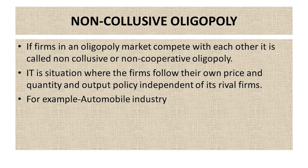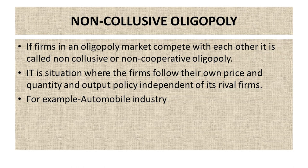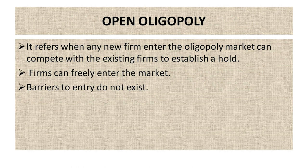The next type is non-collusive oligopoly. If firms in an oligopoly market compete with each other, it is called non-collusive or non-cooperative oligopoly. It is a situation where firms follow their own price, quantity, and output policy independent of rival firms. An example is the automobile industry, where firms compete aggressively but do not engage in explicit collusion. The next type is open oligopoly, which refers to a market where any new firm can enter and compete with existing firms.